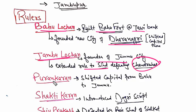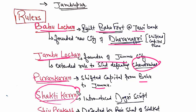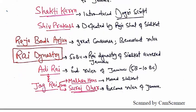The next important king is Puran Karan. Puran Karan shifted the capital from Jammu back to Bahu. Then another important ruler is Shakti Karan, who introduced the script of Dogri. The last ruler of this dynasty was Shiv Prakash, who was the king of Siyal court.